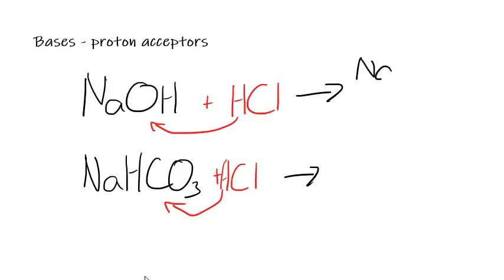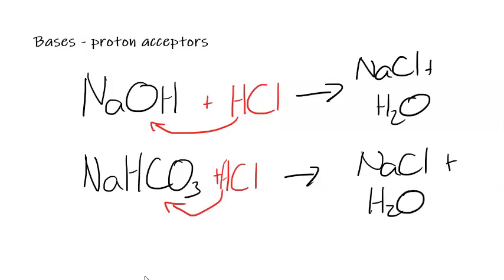In this case it would be NaCl, and we always form water (H2O). So this would form NaCl as well, salt plus water. And in the case of carbonates we would get carbon dioxide formed as well. The reason we form these products is because this base has accepted a proton from the acid.